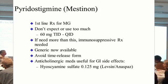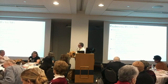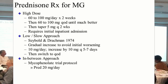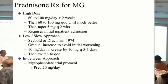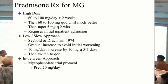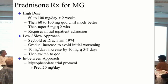On prednisone: there are different ways to start it — very high doses, very low doses, or intermediate doses. Over the years I've evolved. I'm now putting most patients right off the bat on 20 milligrams of prednisone a day. I don't work up from five or ten — I just start at 20, and often that's enough. I usually don't start real high anymore unless the patient is in the hospital on a ventilator, getting plasmapheresis, or IVIG.